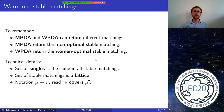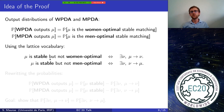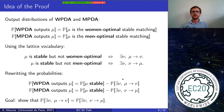Now for the proof. We want to show that the probability of men-proposing DA outputting a matching nu equals the probability of women-proposing DA outputting nu. We use the fact that men-proposing outputs the men-optimal matching and women-proposing outputs the women-optimal matching. Using lattice vocabulary: mu is stable but not women-optimal whenever there exists another matching nu that covers mu; symmetrically, mu is not men-optimal when there is a matching covered by mu. We can then rewrite both probabilities in terms of these covering relations, and what remains is to prove an equality of probabilities over covering events.